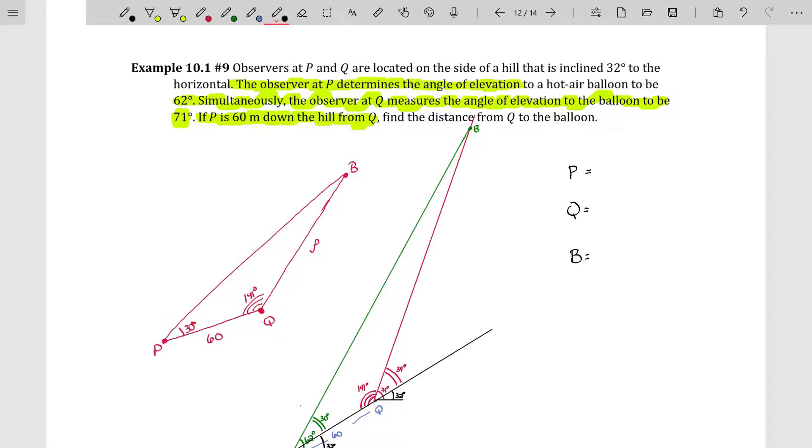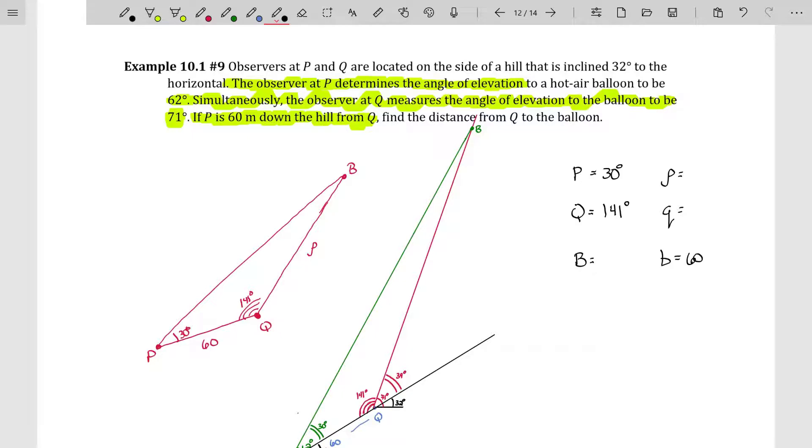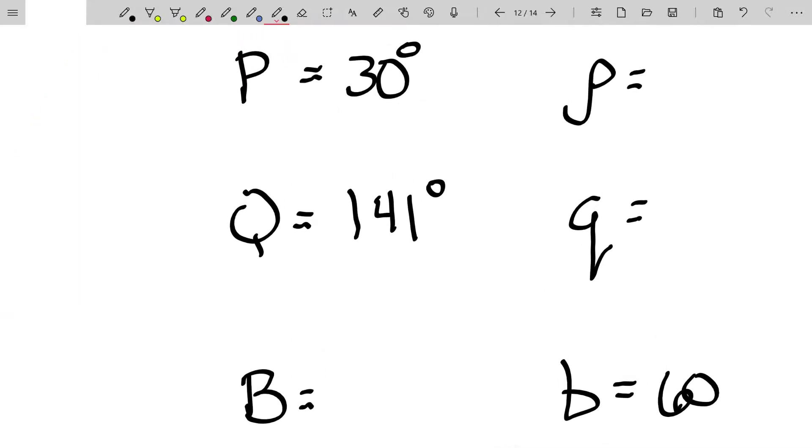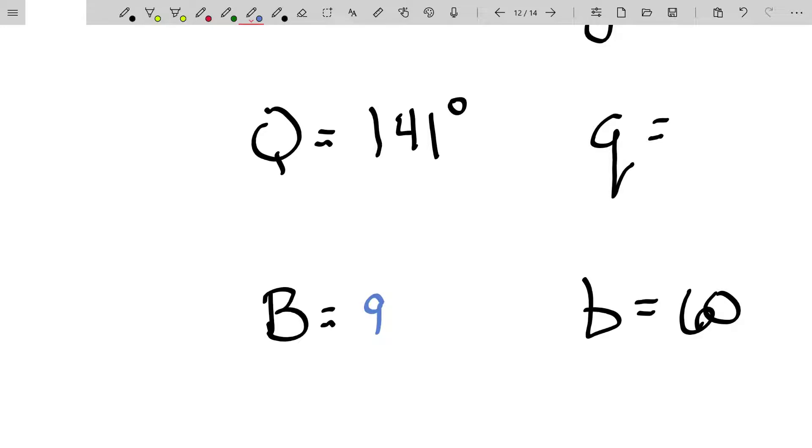We happen to know that angle P is 30 and angle Q is 141. And we want to know what side length little P is because that's a distance from Q to the balloon, which is exactly what they're asking for. I have angles P, Q and B. Angle P was 30 degrees. Angle Q was 141 degrees. And angle B, we don't know. And actually we don't care. Side P, we don't know. And we do care. We want side P. Side B is 60.